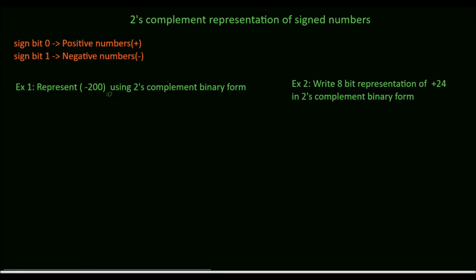In this tutorial we will see how to represent signed numbers in 2's complement form. Sign bit is 0 for positive numbers and sign bit is 1 for negative numbers.